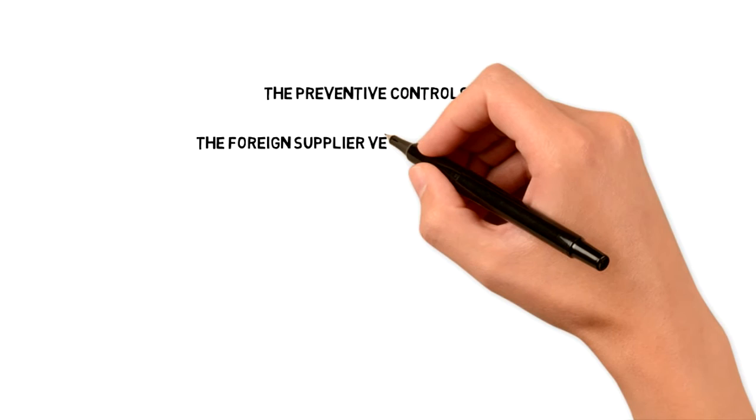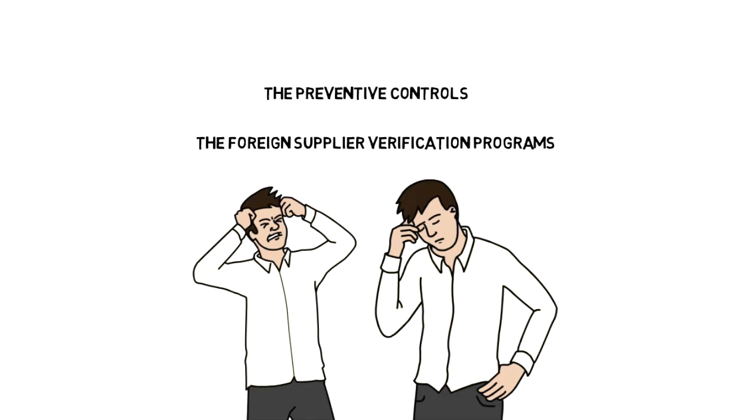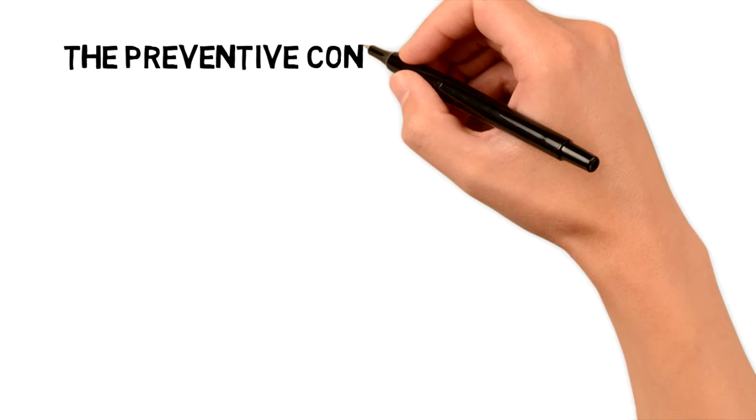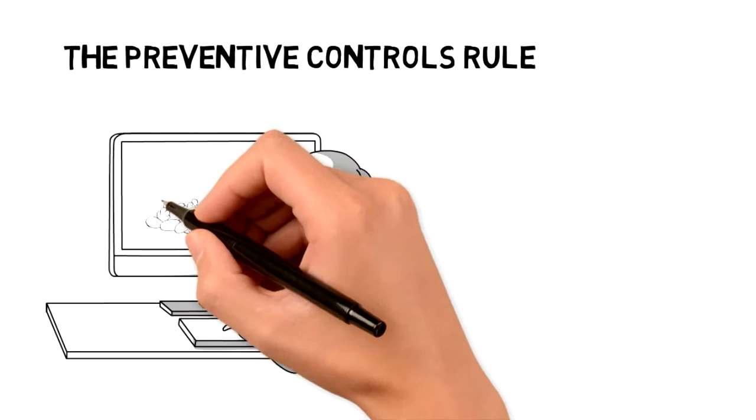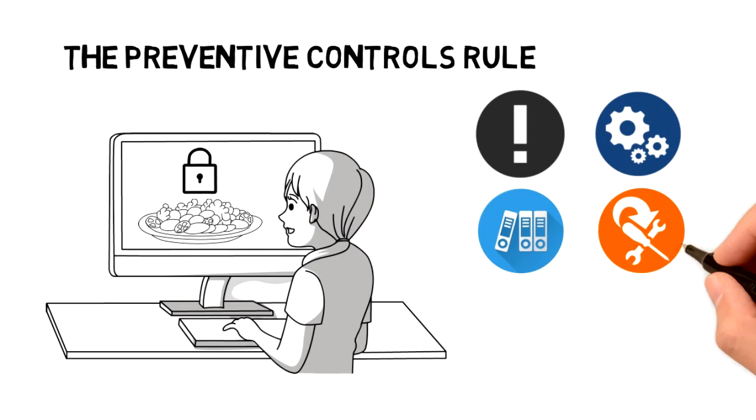Beyond that, many companies are finding two of the rules, the preventive controls and the Foreign Supplier Verification Programs, or FSVP, rules to be the most challenging for them, probably because they are the meatiest of the major rules. Most companies subject to the preventive controls rule will need to do quite a bit of work, including an in-depth food safety plan, which will require a hazard analysis, implementation of preventive controls, monitoring, corrective actions where necessary, verification, and record keeping.